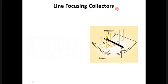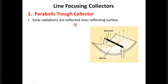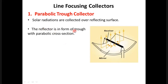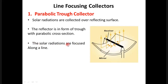The first line focusing collector we will discuss is the parabolic trough collector. As shown in the figure, solar radiations are collected over a reflecting surface — essentially a mirror. The reflector is in the form of a trough with a parabolic cross section. Solar radiations are focused along a line — when radiation falls on this parabolic reflector, it is concentrated at a focal axis.